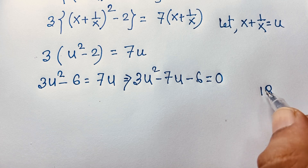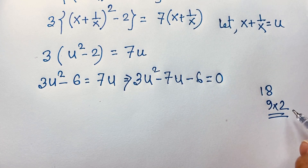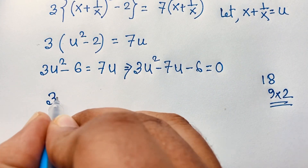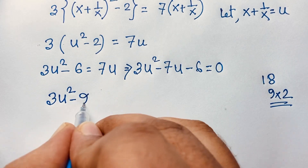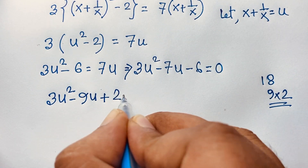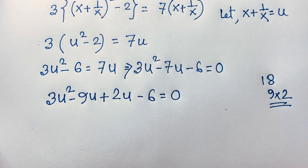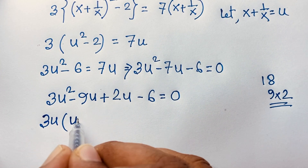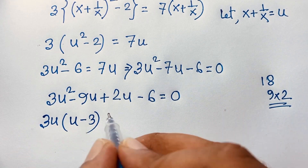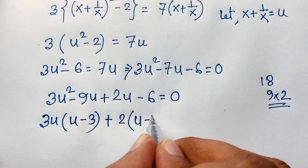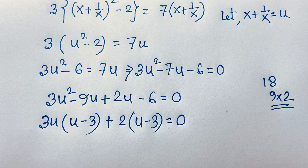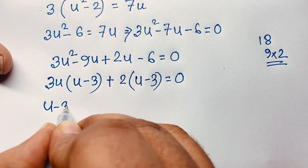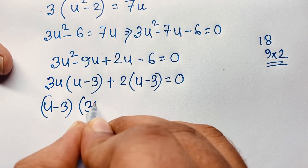We need factors of 18 that differ by 7: that's 9 and 2, since 9 minus 2 equals 7. Splitting the middle term: 3u squared minus 9u plus 2u minus 6 equals 0. Taking 3u as common from the first two terms gives 3u(u minus 3), and 2 as common from the last two gives 2(u minus 3), so (u minus 3) is a common factor, yielding (u minus 3)(3u plus 2) equals 0.